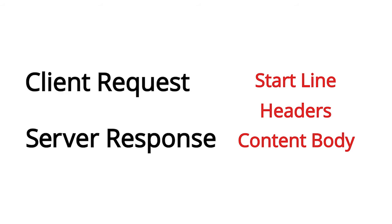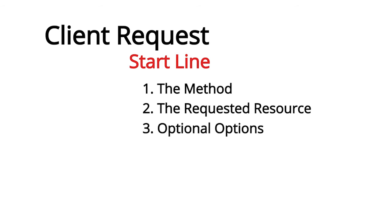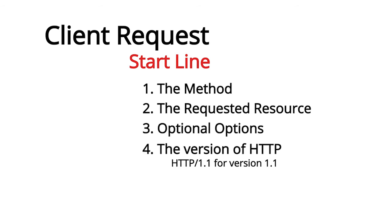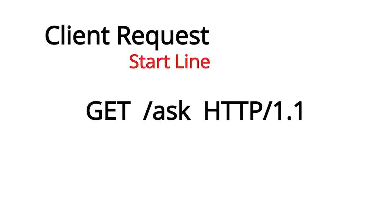An HTTP client request begins with the start line, which is made up of five elements: the method, the requested resource, the optional options, the version of HTTP that will be used — for HTTP 1.1 that will always be HTTP/1.1 — and finally a \r\n which indicates the end of the start line. Here's an example of a legal client request start line: GET /ask HTTP/1.1. In this example, the method is GET, the resource is /ask, and the version is HTTP/1.1. There are no options, and the \r\n is handled automatically by the library.